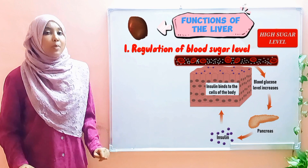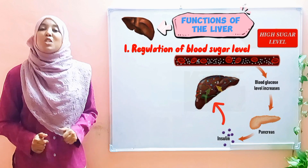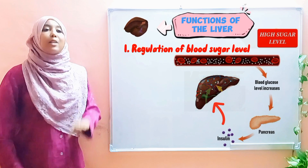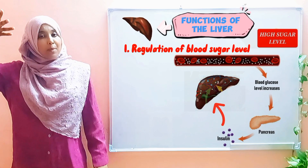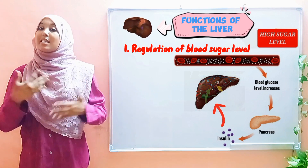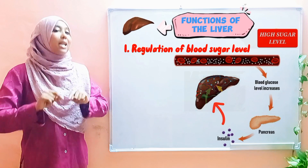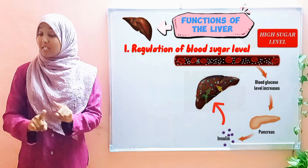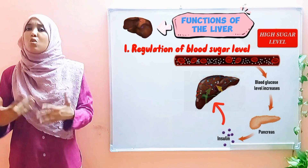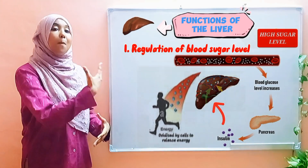Insulin is secreted by the pancreas into the bloodstream. It is then transported to the liver where it gets to work. What does insulin do? Essentially, insulin needs to lower the blood sugar level, since we find it above normal. Insulin initiates a series of events which will ensure that the level of sugar in the blood goes back down to normal. When I talk about sugar, I'm referring to glucose.